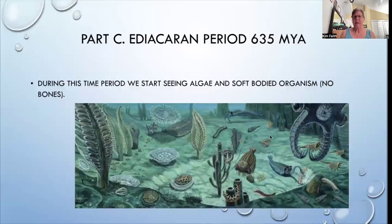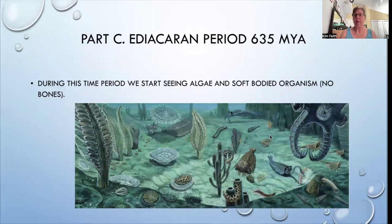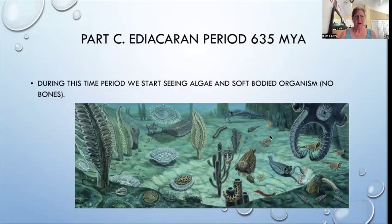Good morning. This is the last video lecture for unit two. We're going to talk about the Ediacaran period, which is 635 million years ago. During this time, we start seeing algae and soft-bodied organisms — no bones. These organisms did not have any internal skeleton. We can see some really weird-looking organisms during this time period.